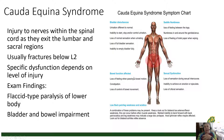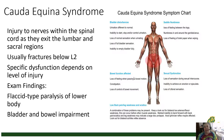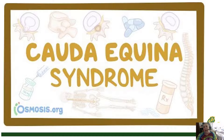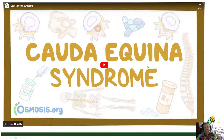The cauda equina consists of spinal nerves within the spinal canal below the level of L2. Cauda equina syndrome describes injury to the cauda equina, usually occurring with spinal fractures below the L2 level. The dysfunction that occurs depends on which nerves are involved; you can get flaccid paralysis of the lower extremities, and it is very common to get involvement of bowel, bladder, and sexual function.